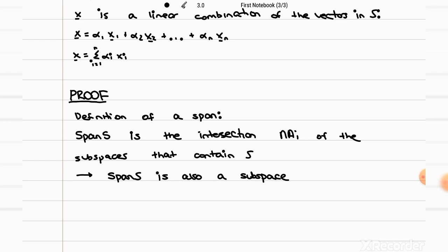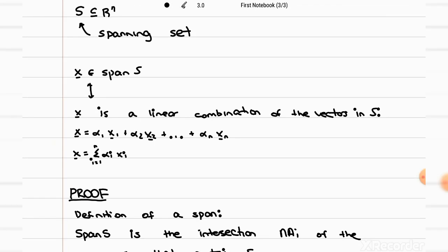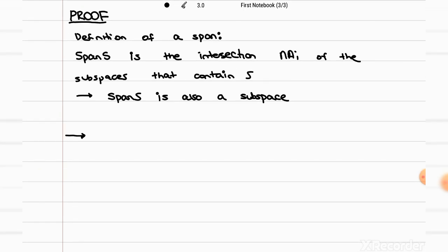So for the proof, we have to prove it both ways — it's an if-and-only-if theorem. In the first direction, we want to prove that if a vector belongs to the span, so if it belongs to the intersection of all of these subspaces, then the vector must be a linear combination of the vectors in the spanning set. So we start off knowing that A represents all of the vectors that can be written as linear combinations.